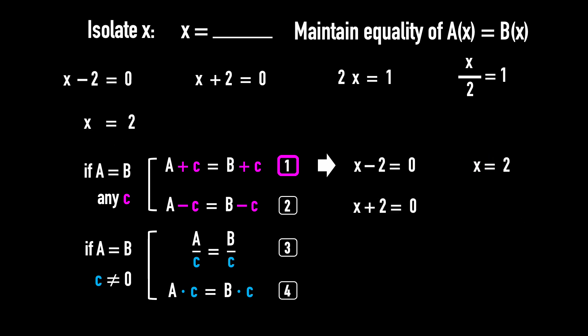Example 2. Apply rule number 2. Subtract the same number 2 from both sides. So, X plus 2 minus 2 equals 0 minus 2. Combine like terms, X equals negative 2.